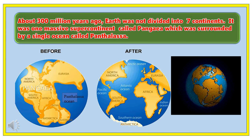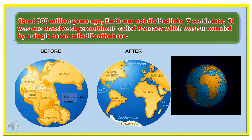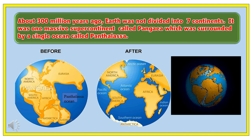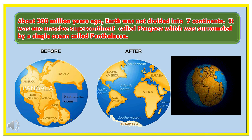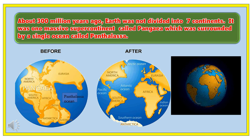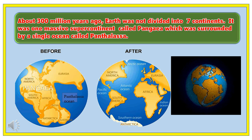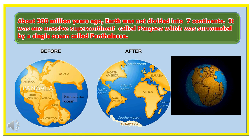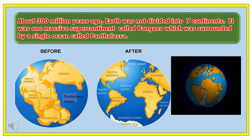About 300 million years ago, the earth was not divided into seven continents as it is today. The earth was one massive supercontinent called Pangaea, which was surrounded by a single ocean called Panthalassa.